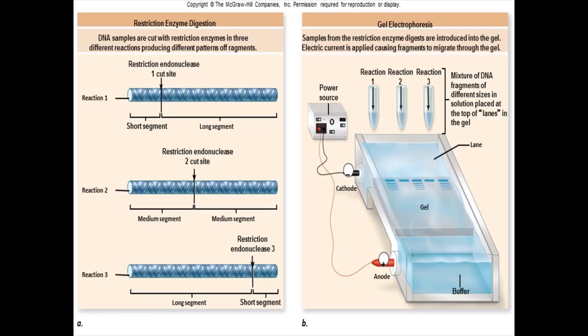Here is an example of analyzing various DNA fragments by restriction enzyme digestion using gel electrophoresis. The DNA samples are cut with restriction enzymes in three different reactions, producing different patterns of fragments. As you can see, we have three reactions here.